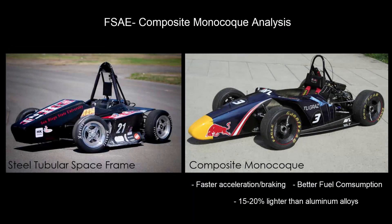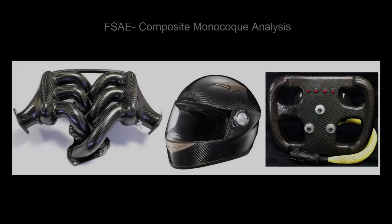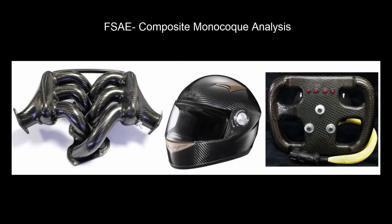Composite monocoque's advantage in delivering higher strength and lower mass in comparison to metal frames greatly contributes to increasing the performance of the car. Another benefit of using composite materials is the manufacturability.